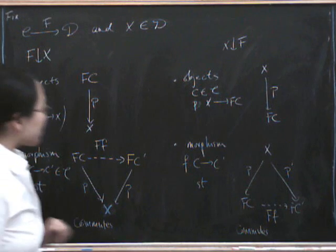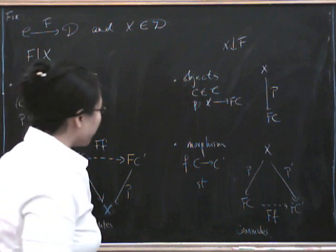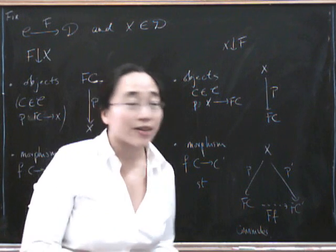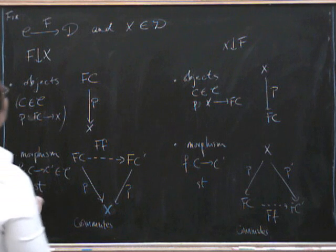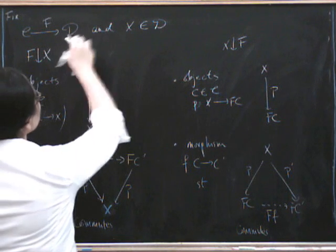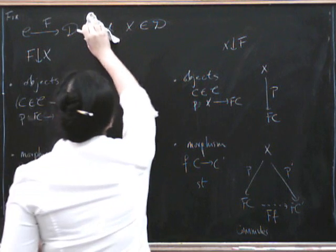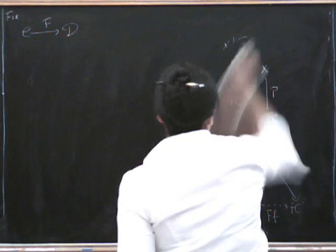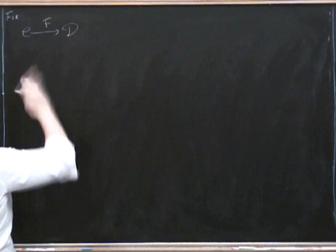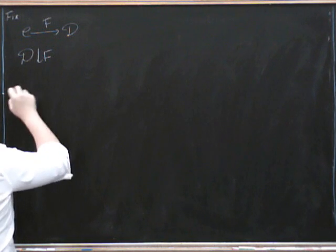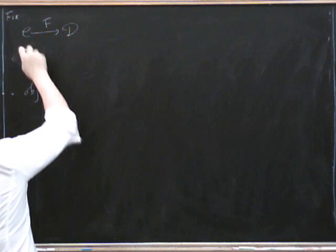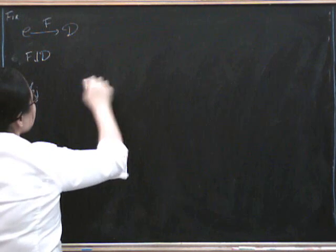Now, one of the reasons I'm particularly fond of these comma categories is they give us a very nice way of talking about adjunctions. But I'm going to leave that for now and plow on to an even further generalization of this comma category, which is that if we fix this functor but not the object X in D, then we can do a further kind of comma category, which is that we can slice this category down to F. So now the objects are going to be F down to D.